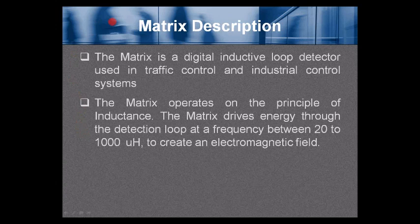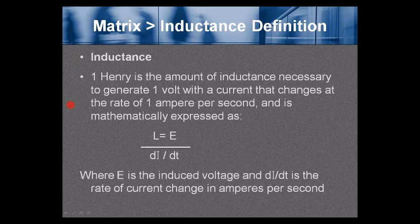The Matrix is a digital inductive loop detector used in traffic control and industrial control systems. The Matrix operates on the principle of inductance. The Matrix drives energy through the detection loop at a frequency between 20 to 1,000 microhenries to create an electromagnetic field.